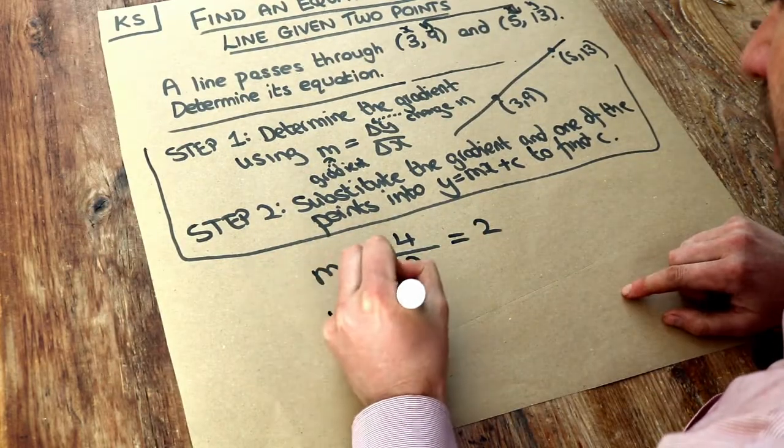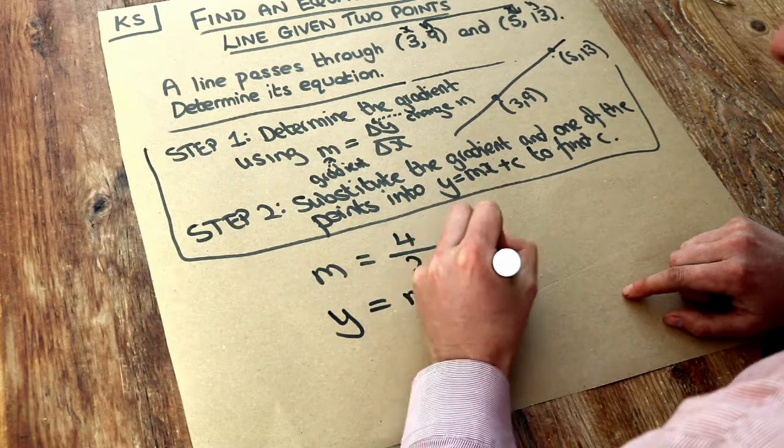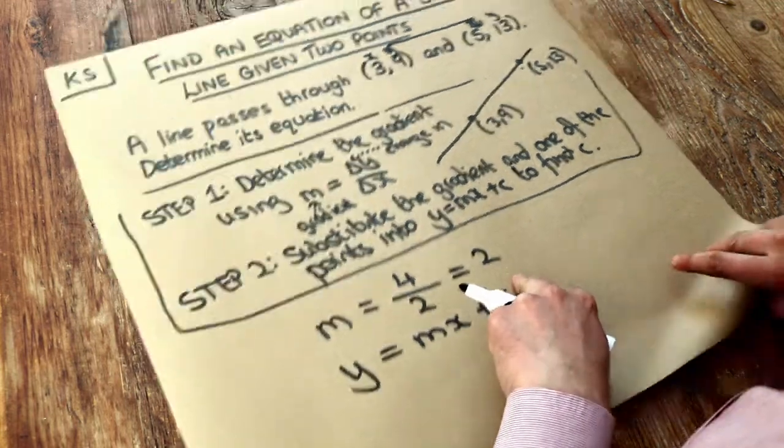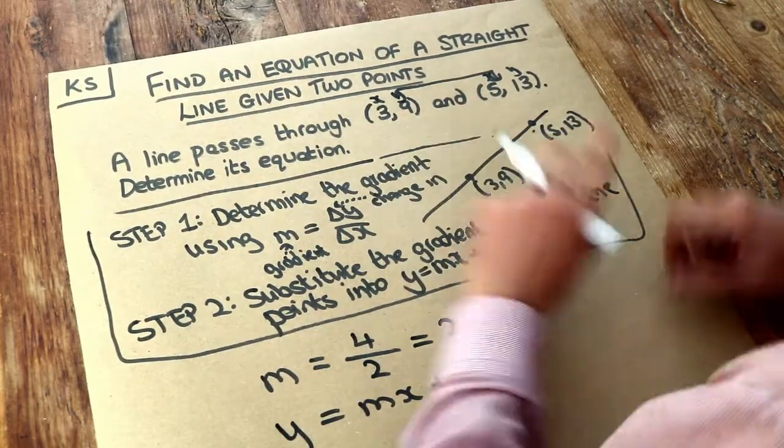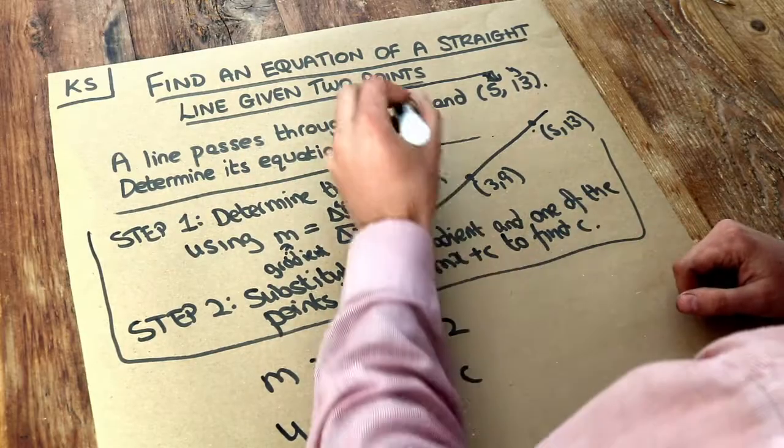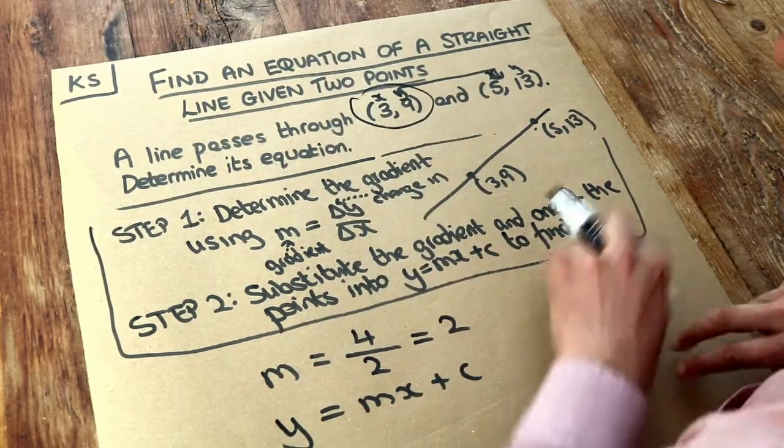So, let's write out y equals mx plus c, and then substitute everything we know into it. So, we have to choose one of these two points. It doesn't matter which, you'll get the same answer. I'm just going to choose the (3,9) because it's smaller numbers.